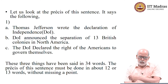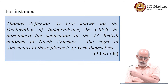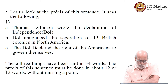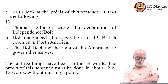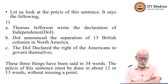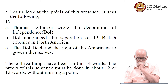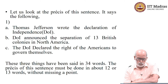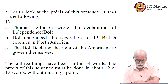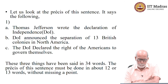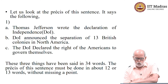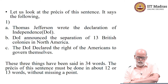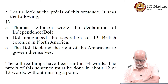Now look at the précis we have done. The following points have been made from that sentence. Number one: Thomas Jefferson wrote the Declaration of Independence. Two: the Declaration of Independence announced the separation of the thirteen British colonies in North America. Three: the Declaration of Independence also declared the right of the Americans to govern themselves. These three things have been said in 34 words.